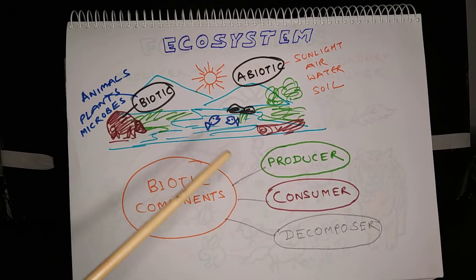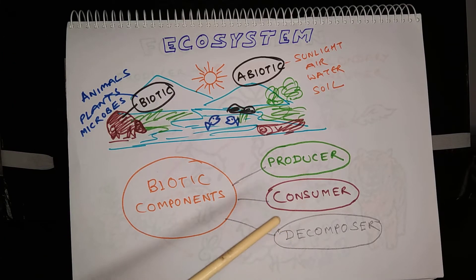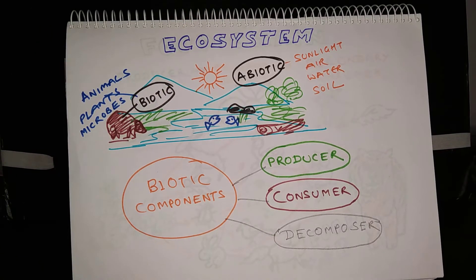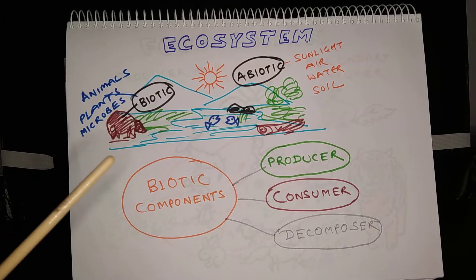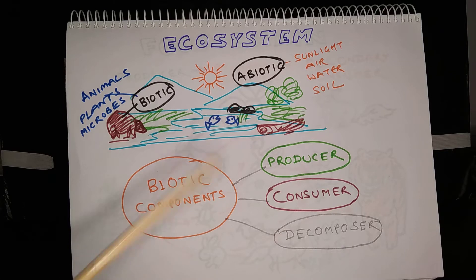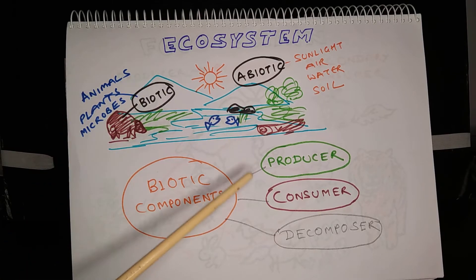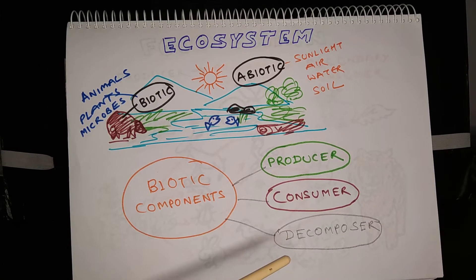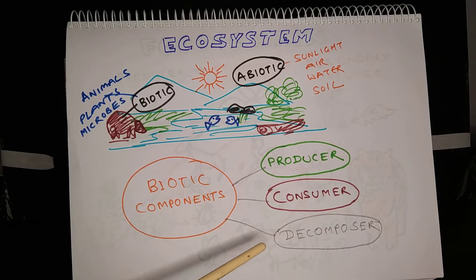The living beings form the biotic components — animals, plants and microbes. Non-living things, for example sunlight, air, water and soil, comprise the abiotic component. Biotic components can be divided into three categories: producer, consumer and decomposer. Green plants and some bacteria make their own food and that is why they are called producers, because the food prepared by them is utilized by other living beings.